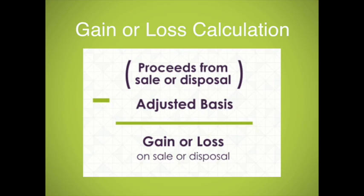To calculate the gain or loss on the sale of property, you subtract your adjusted basis in the property from the total sales price.